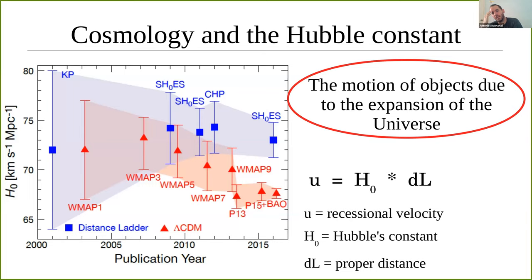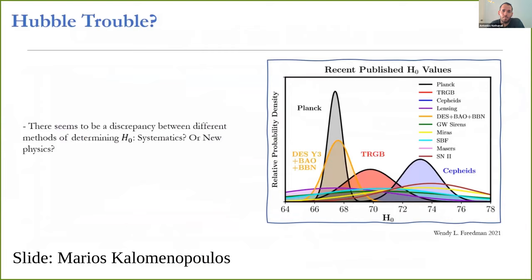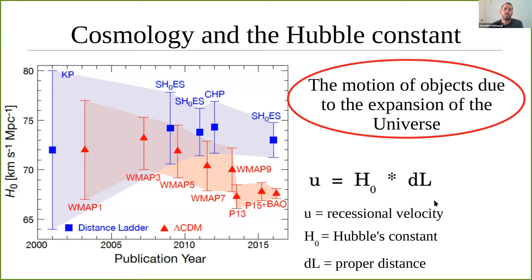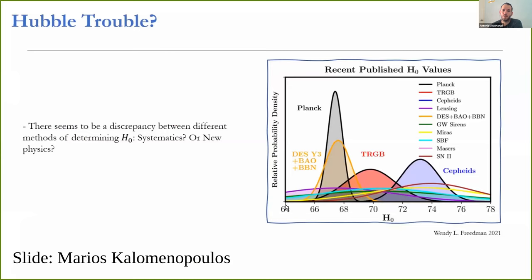We heard a lot from Marius Kalomenopoulos about the cosmology of the Hubble constant. There are many experiments trying to nail down its actual value. This shows the evolution of constraints over the last 15 or more years. Twenty years ago the values were really close to each other and within the error bars. Nowadays they are not, and if you put all the experiments together you have the Hubble trouble.